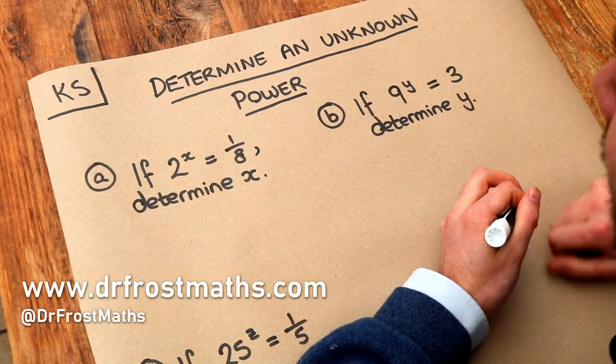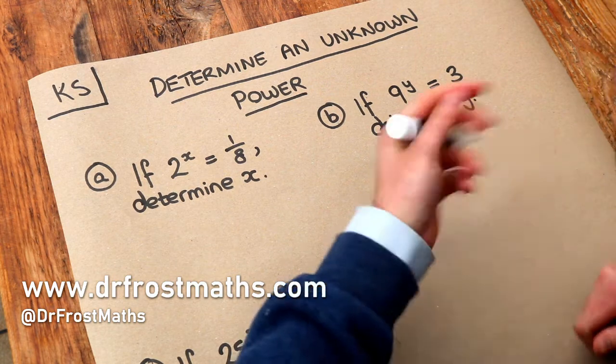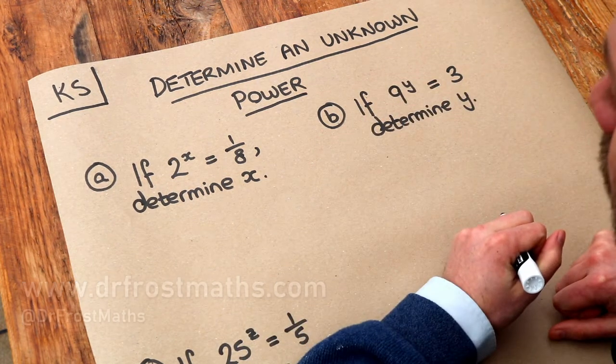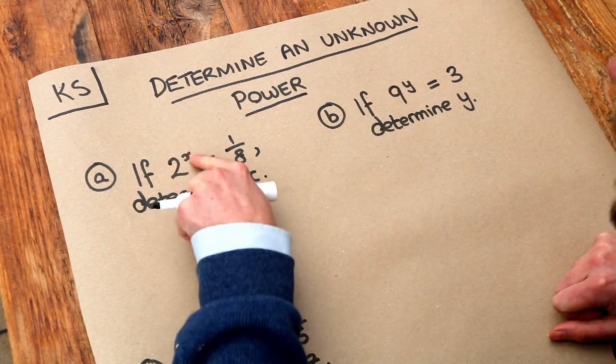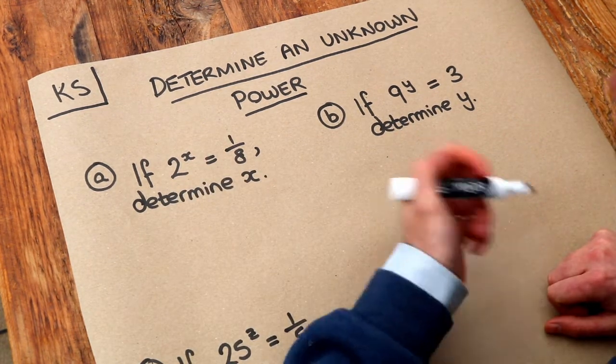Hello and welcome to this Dr. Frost Maths key skill video on determining an unknown power. Now we've looked at what happens when you have a fraction or a negative power, but in these questions it's this index here that's unknown. And all we need to do is just to kind of think backwards.